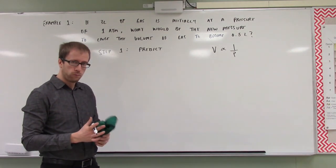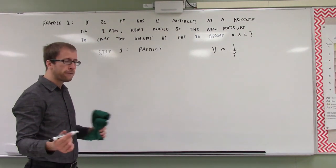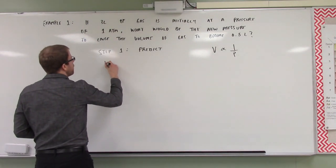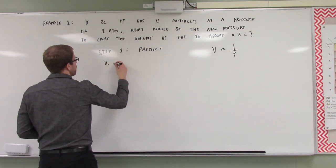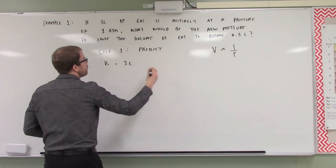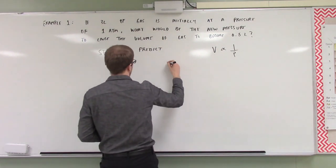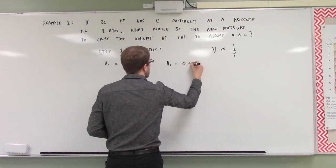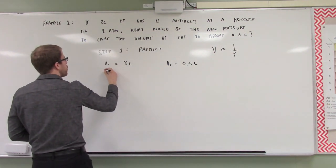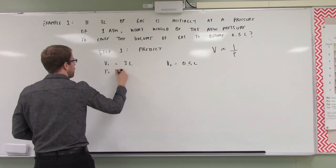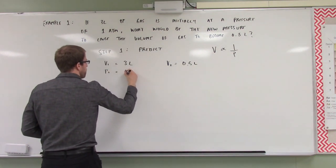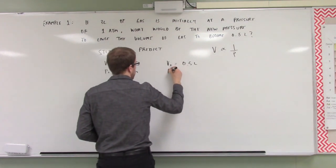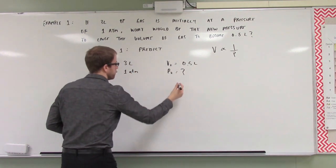So let's write down what we have first. We have an initial volume of three liters, a final volume of 0.5 liters, an initial pressure of one atmosphere, and we're looking for our final pressure.